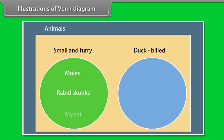Moles, rabbit, skunks and my cat are all small and furry. Swans, geese and Edmontosaurus are all duck bills. Worms are small but not furry and horses are furry but not small and neither is a duck bill.